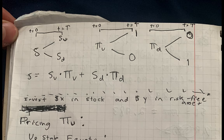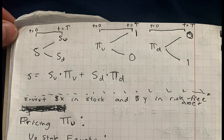We can write an equation where the price of the stock is equivalent to a combination of up state and down state securities. If we hold s_u up state securities, then s_u times one gives us s_u in the up state and zero in the down state. Adding s_d down state securities replicates the original stock exactly. So the price of s_u up state securities plus s_d down state securities must equal the price of the stock, because otherwise there would be an arbitrage opportunity.